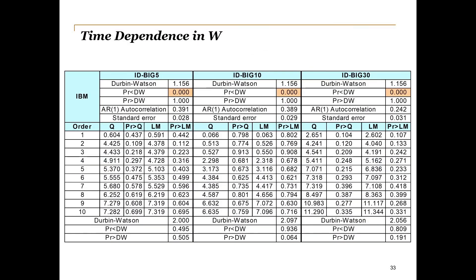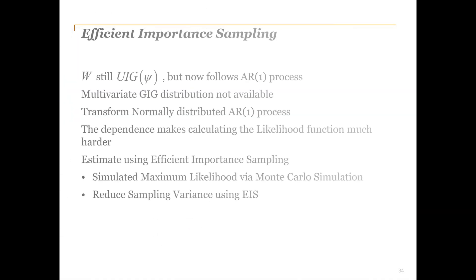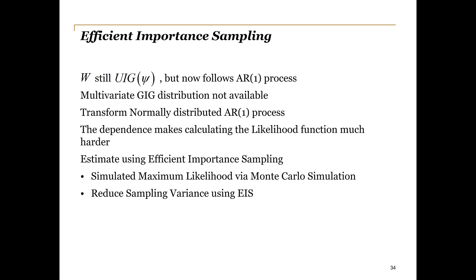Firstly, the autocorrelation parameter is significantly different from zero, as expected. Secondly, allowing for first order or AR1 autocorrelation is sufficient in this case, since the tests do not indicate any remaining effects. Adding this autocorrelation assumption to the W's makes it much more difficult to estimate the likelihood function, since a suitable multivariate inverse Gaussian distribution does not seem to exist.